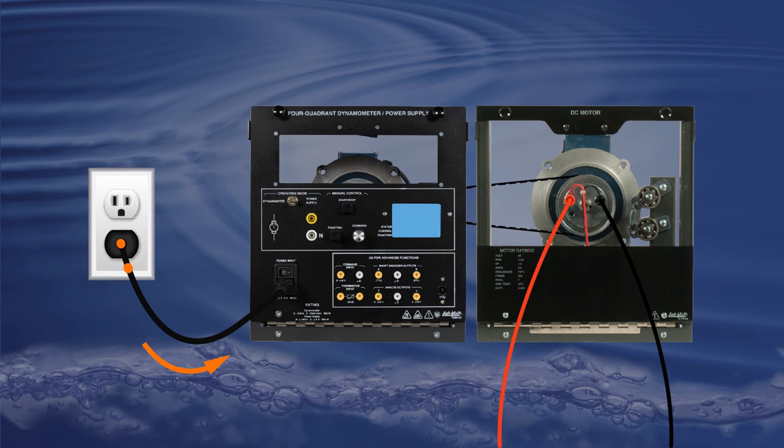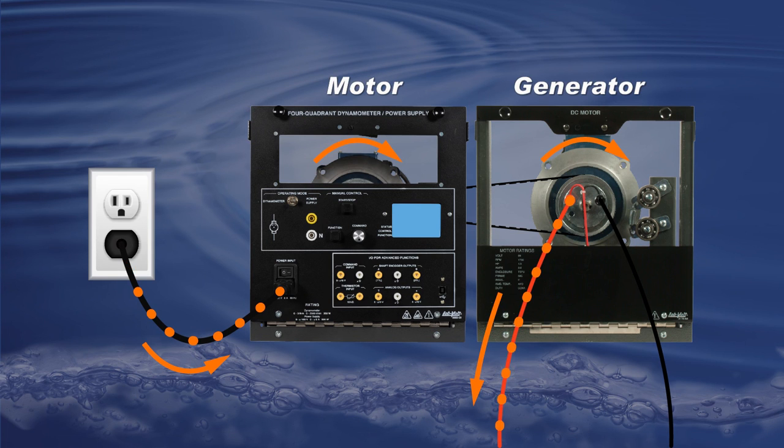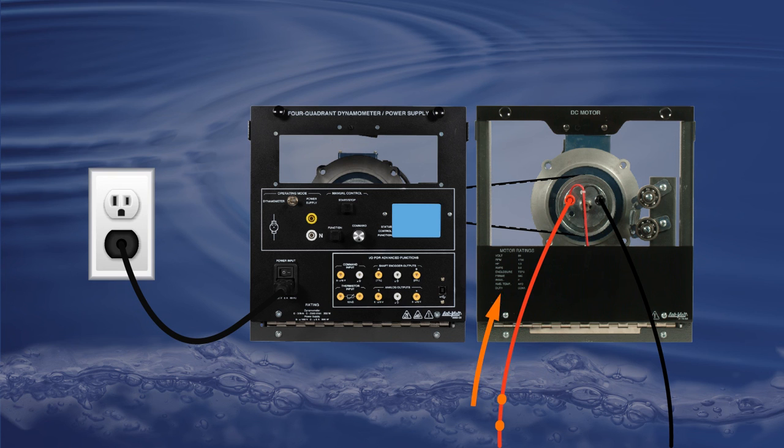Please note that the four-quadrant operation property can also be observed when in dynamometer mode, using functions such as clockwise and counterclockwise constant speed prime mover.